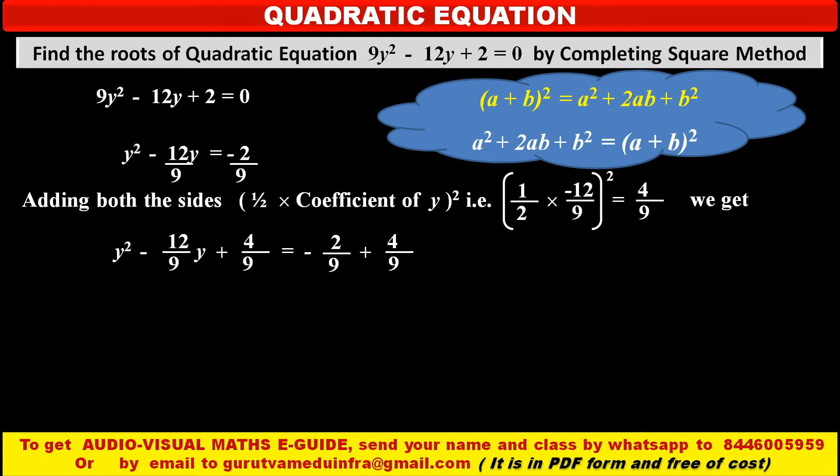In the left hand side y² - 12/9 y + our new term 4/9 is equal to, in the right hand side, -2/9 as it is plus our new term 4/9. Now left hand side is the expansion of (y - 2/3)² according to our above formula, equals in the right hand side solving we get 2/9.